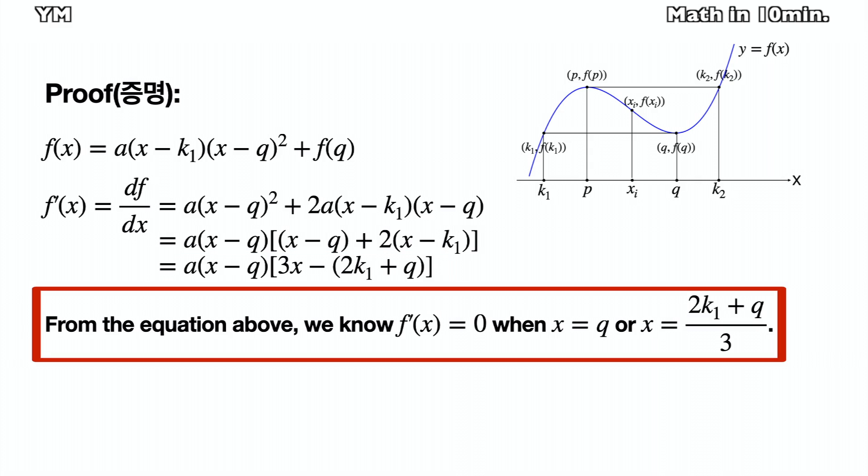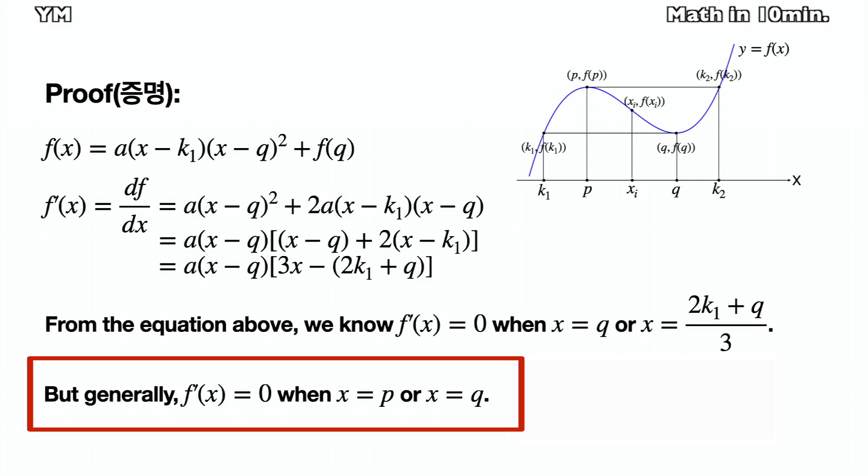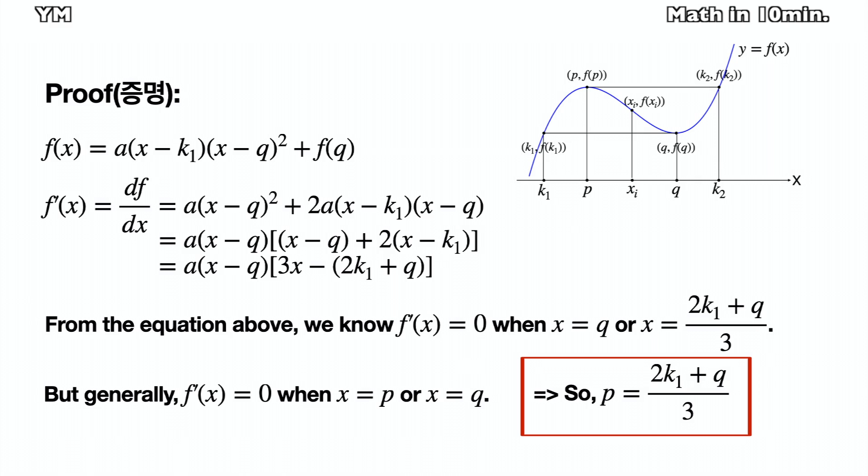From this equation, we know that f' equals 0 when x equals q or x equals (2k1 + q) / 3. But f' equals 0 when x equals p since (p, f(p)) is extrema. So p equals (2k1 + q) / 3.